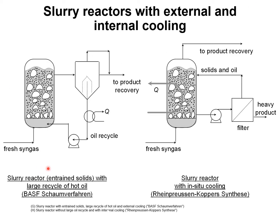The Fischer-Tropsch synthesis may also be carried out with catalyst particles smaller than about 50 micrometers in the slurry phase. On the left, we have the BASF slurry reactor process in which the heat of reaction is removed externally via heat exchanger. On the right, we have the slurry reactor process developed by Rheinpreußen-Koppers in which the heat of reaction is removed with in-situ cooling inside the slurry reactor, with recycle of the oil back to the reactor and withdrawal of the desired chain length product.